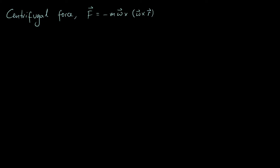In my last video I derived the equation of motion for an object as seen from the point of view of a rotating frame, and showed where the various fictitious force terms come from, including the centrifugal force. The centrifugal force is given by minus m omega crossed with omega cross r, where m is the mass of the object, omega is the angular velocity of the rotating frame, and r is the position vector of the object.